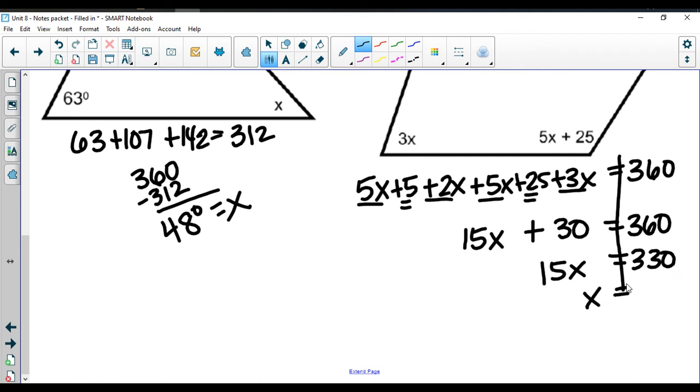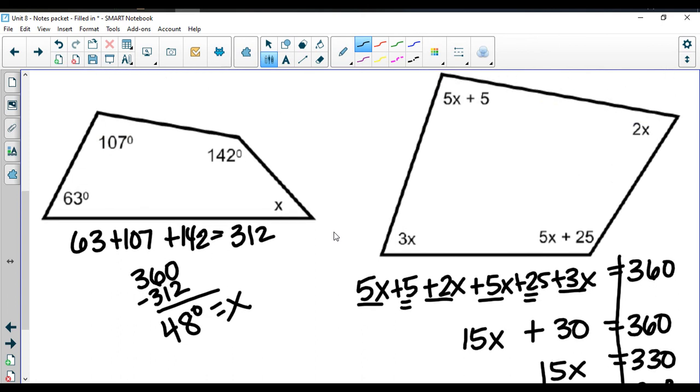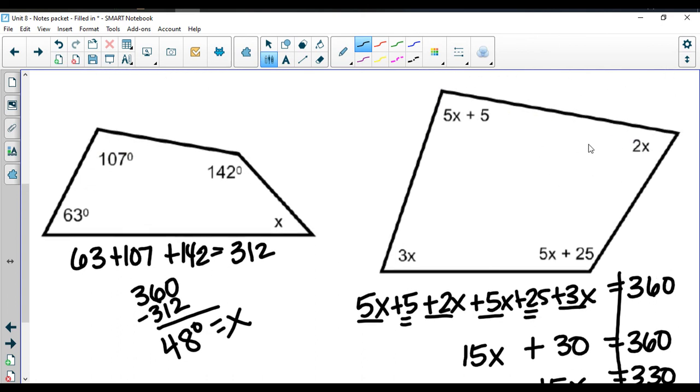And then dividing through by 15, I end up with 22 degrees here. So x is equal to 22 degrees in this case. I could go back in and say, okay, this is 44 degrees. This is going to be 66 degrees.